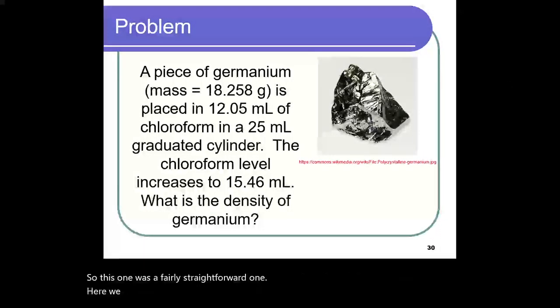Here we have slightly different. We take a piece of germanium, we place it in 12.05 milliliters of chloroform in a 25 milliliter graduated cylinder, chloroform level increases to 15.46 milliliters. What's the density of germanium?